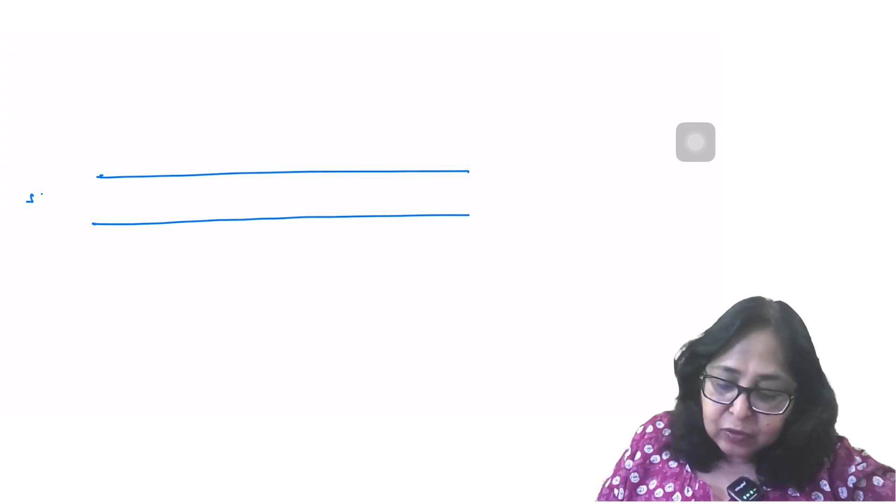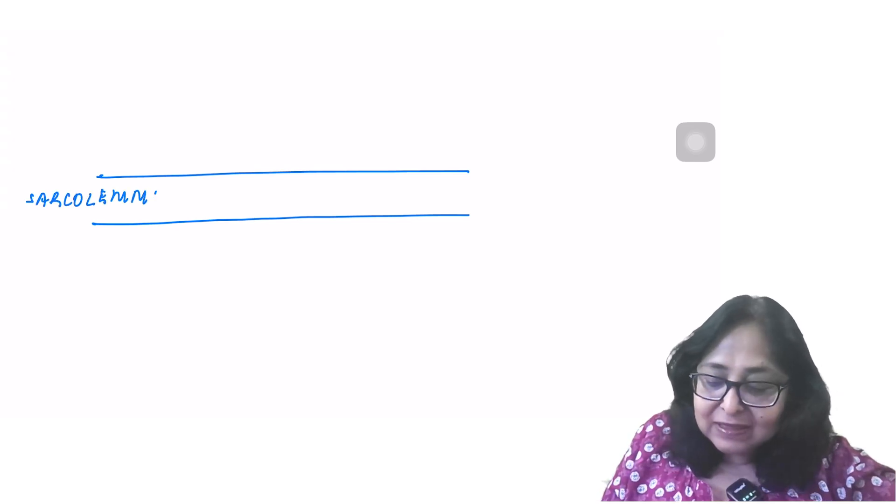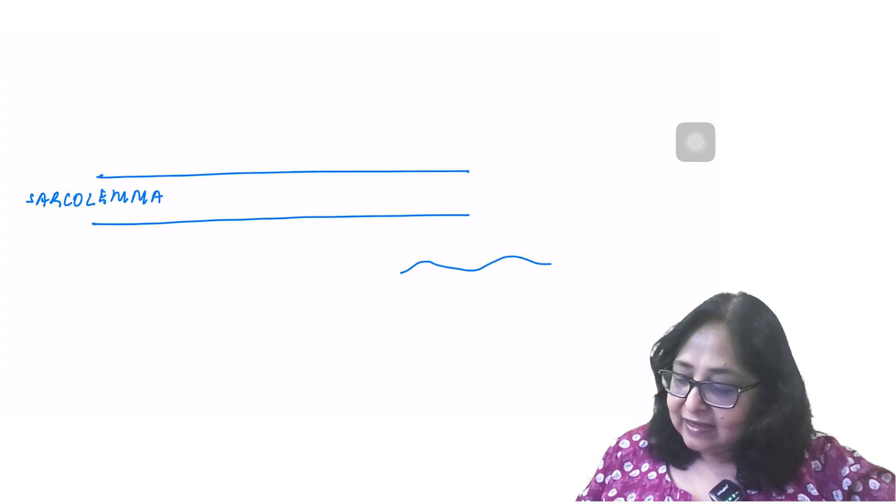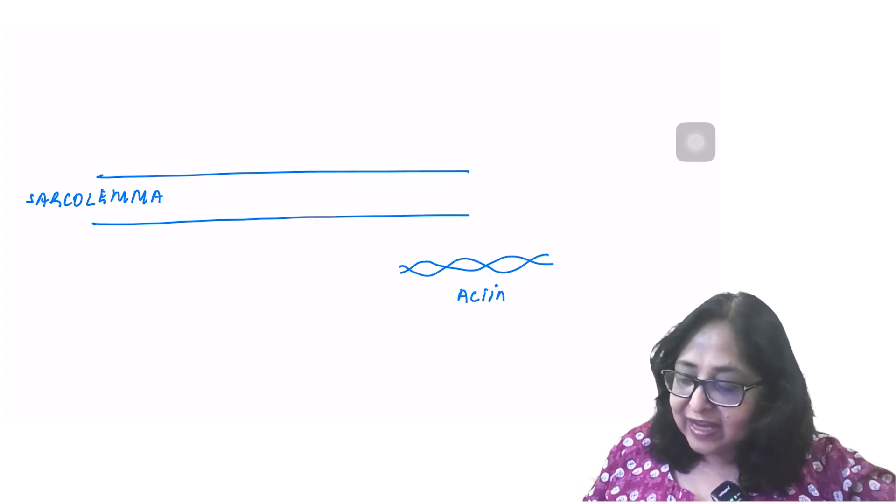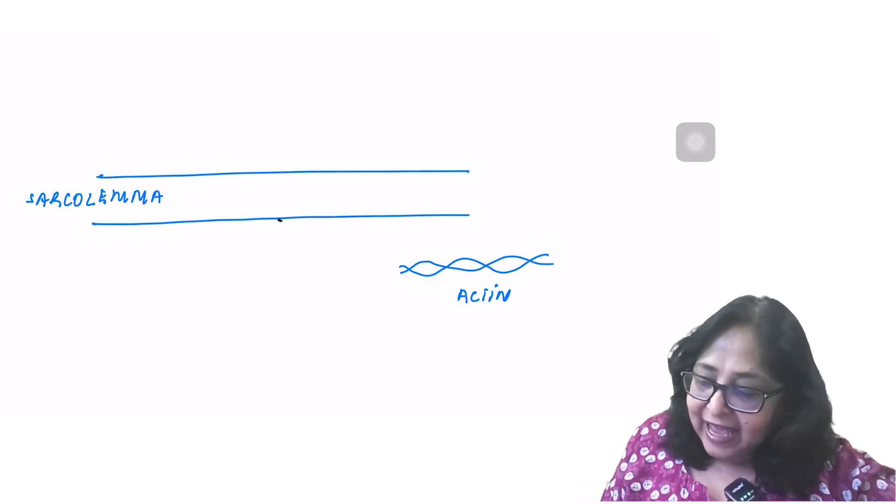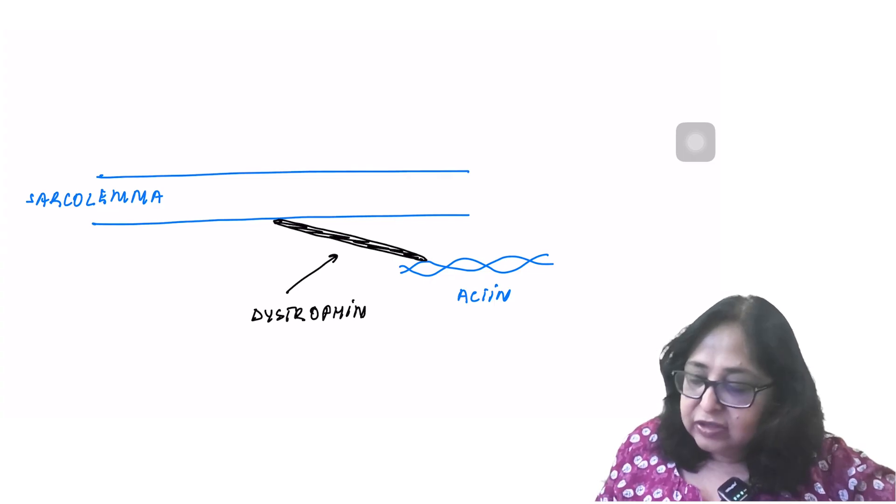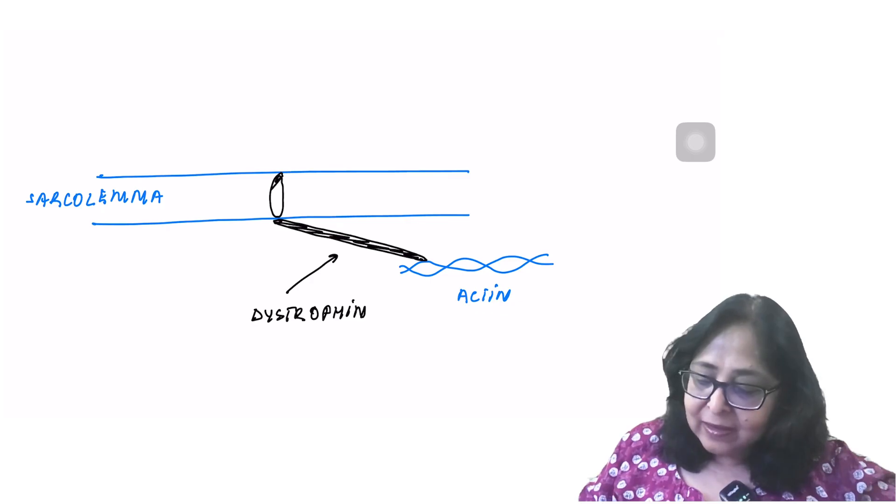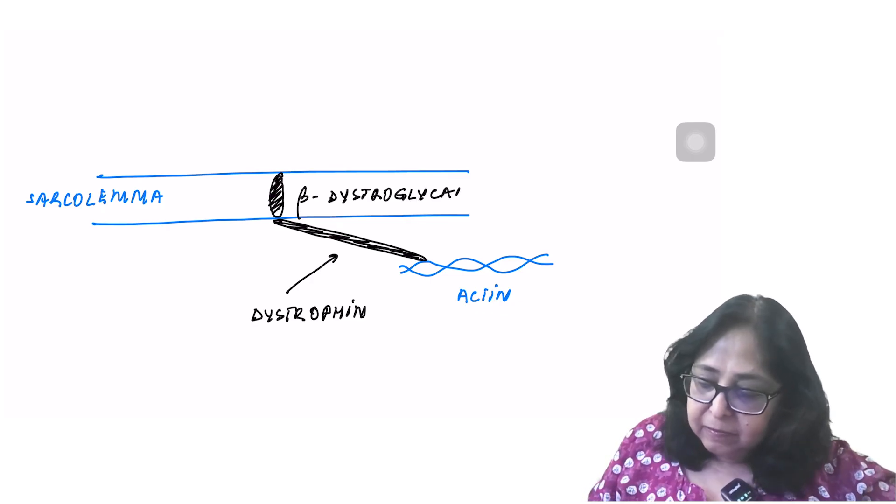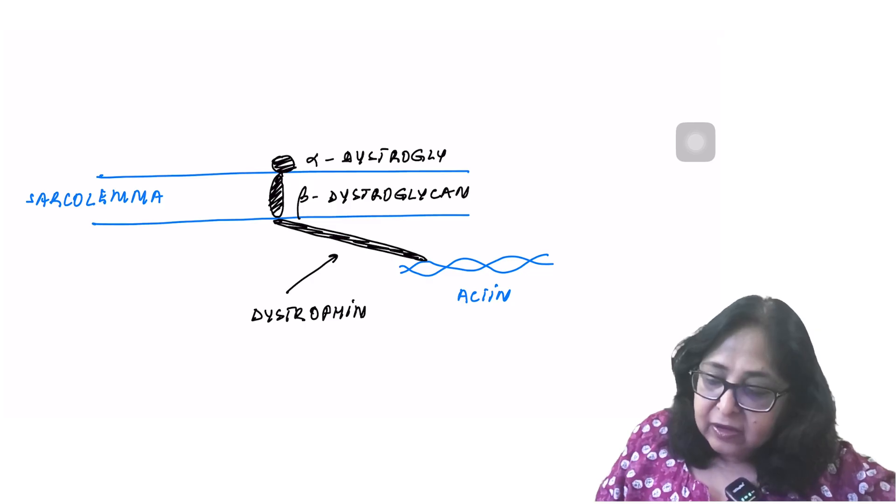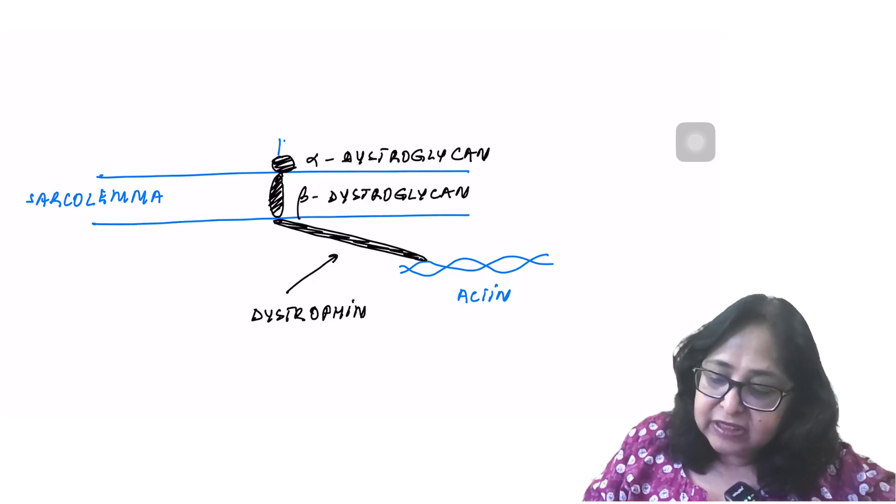This is the sarcolemma. Remember, muscle fiber is equal to the muscle cell. So the cell membrane of the muscle fiber is known as sarcolemma. Here is actin, the two strands of actin in a double helix. Now connecting the cell membrane, to a protein in the cell membrane, this is a rod-like protein which is called dystrophin. Dystrophin links actin with beta-dystroglycan. Beta-dystroglycan is associated with alpha-dystroglycan, which in turn is associated with a protein in the extracellular matrix, which is called laminin.